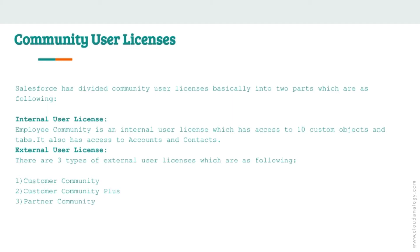Types of Community User Licenses: The community user license is divided into two parts. The internal user license — Employee Community — has access to 10 custom objects and tabs, and also has access to accounts and contacts. The second part is the external user license.